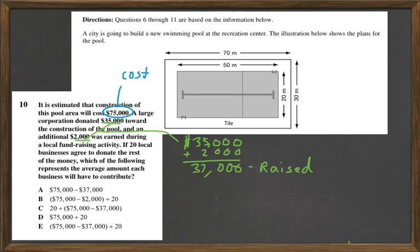The total cost is $75,000. So then we're going to want to subtract out what's been raised so far so we know what's left for those 20 businesses to pay for.